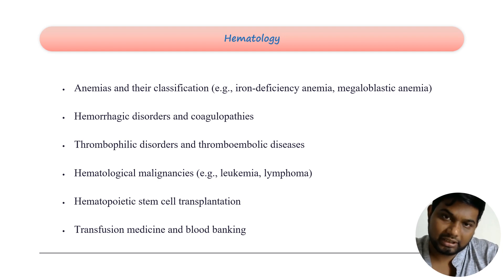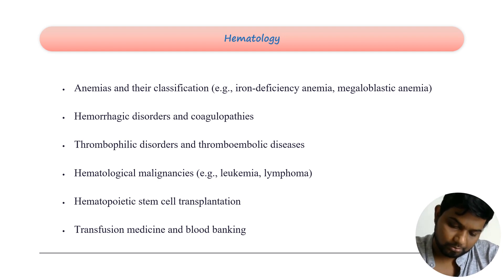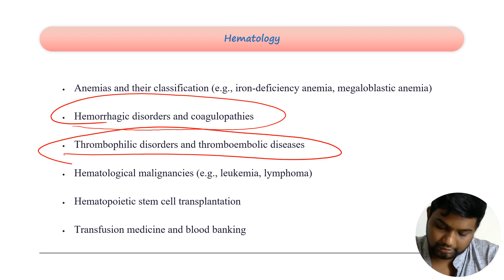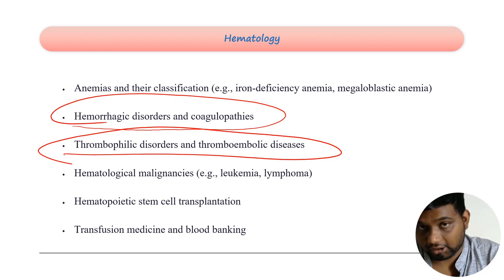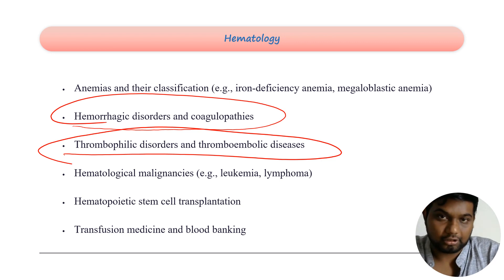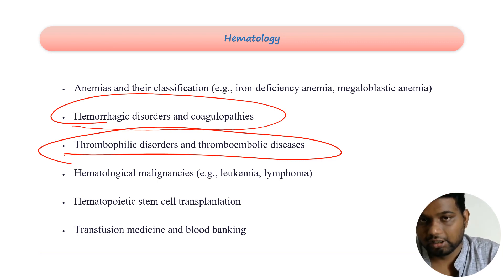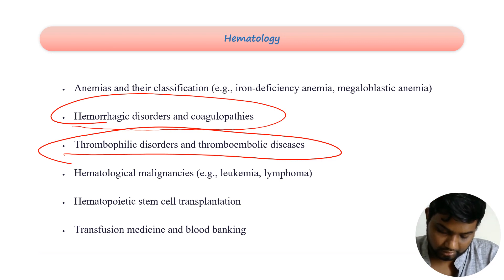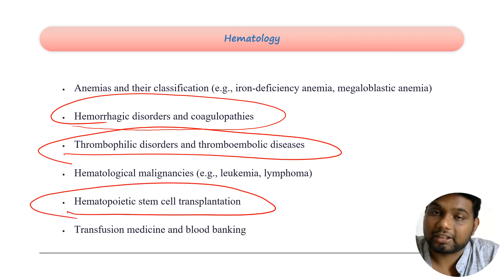In hematology, you study anemia, leukemia, and lymphoma in pathology, so master those there. The main area in medicine is hemorrhagic disorders, coagulopathy, thrombophilic disorders, and thromboembolic diseases — you should not miss these. You study the treatment side — iron supplementation, folic acid supplementation, classification of iron deficiency anemia — in medicine, but the main points for anemia, leukemia, and lymphoma should be mastered in pathology. Stem cell transplantation is a unique topic you have to master in medicine.